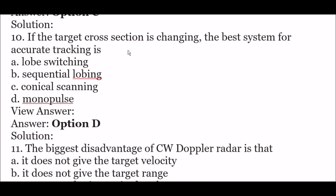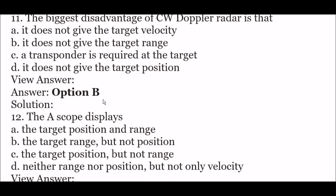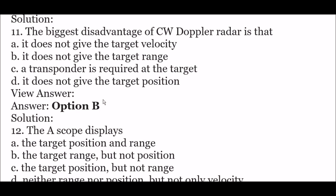Next question: if the target cross-section is changing, the best system for accurate tracking is — option A: lobe switching, option B: sequential lobing, option C: conical scanning, option D: monopulse. The right answer is option D — monopulse. If the target cross-section is changing, the best system for accurate tracking is monopulse.